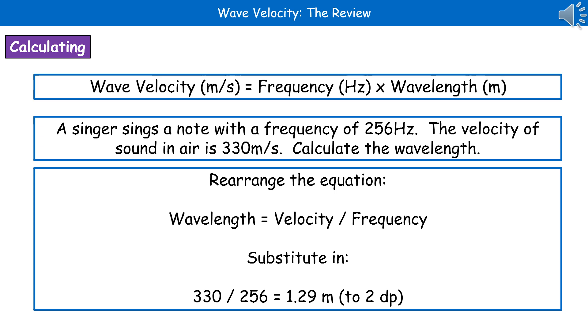First thing we need to do is write down the equation that we've learned, which is wave velocity equals frequency times wavelength, but because we're being asked to calculate the wavelength, we've got to rearrange it. So, rearranging, we end up with wavelength is velocity divided by frequency.